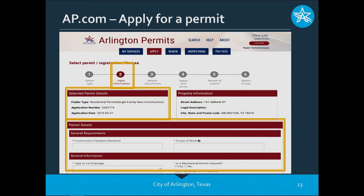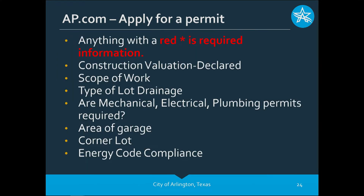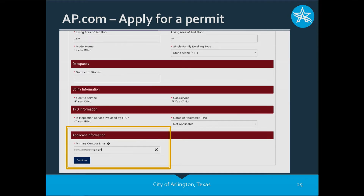Now we're on Step Two — Input Information. We'll be asking for permit details about the project. Everything with a red asterisk in the general requirements requires information from you. Typical fields include construction value, declared scope of work, type of lot, drainage, whether the job will require mechanical, electrical, and plumbing permits, area of the garage, corner lot designation, and energy code compliance. Once you've completed all that information, scroll to the bottom of the screen where it says Application Information. We need a primary contact email so our plans examiner can contact you directly. Then select Continue.